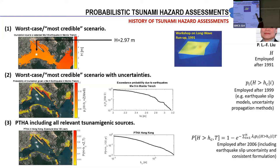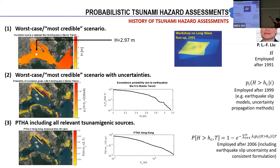Using these models — from that very simple one to more sophisticated models like GeoClaw from Randy LeVeque at Washington University, or COMCOT developed by my advisor — you can come up with maps showing the maximum tsunami elevation for a certain earthquake scenario. From that information, you can create flood maps to understand how far or how high the water will reach over certain urban areas. However, with time we started to realize that if you have two earthquakes of the same magnitude, the associated tsunami will not necessarily be the same, because the earthquake process is so complex that many characteristics change.